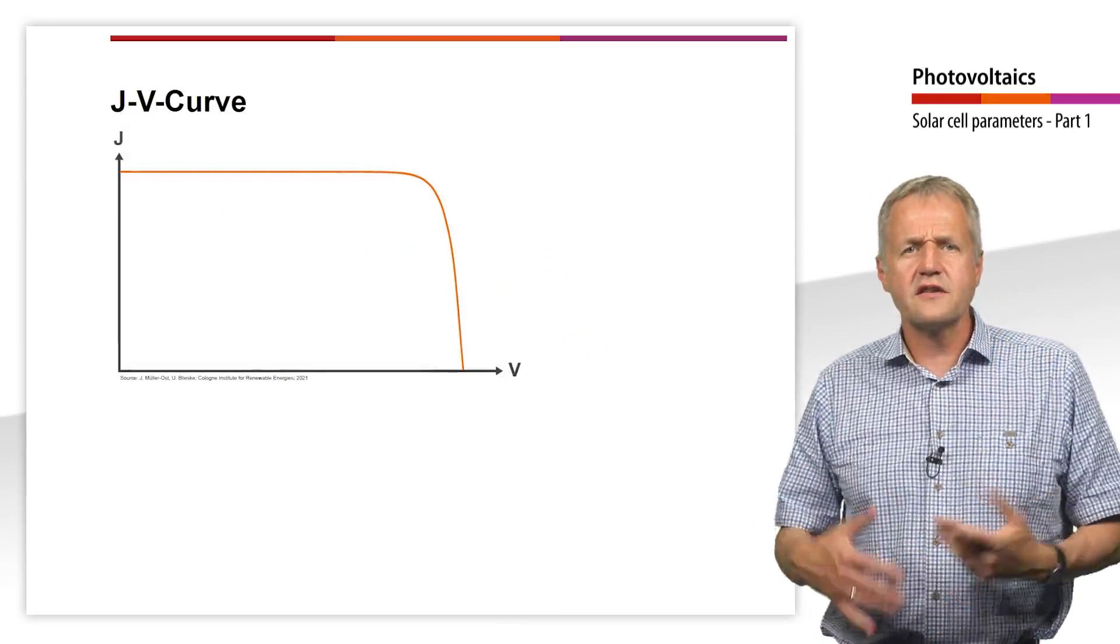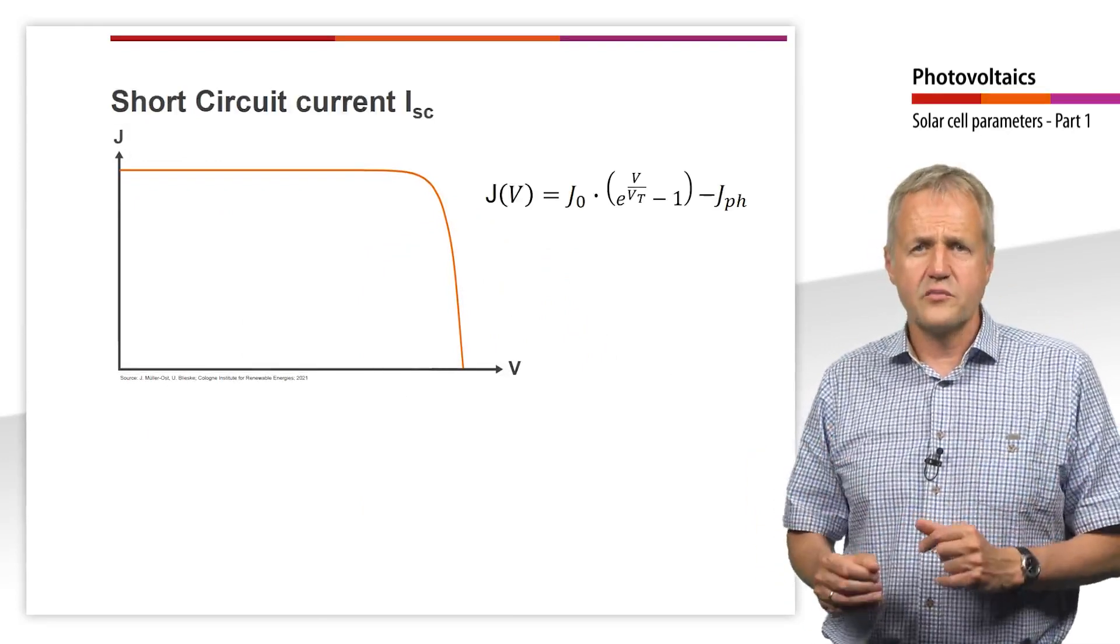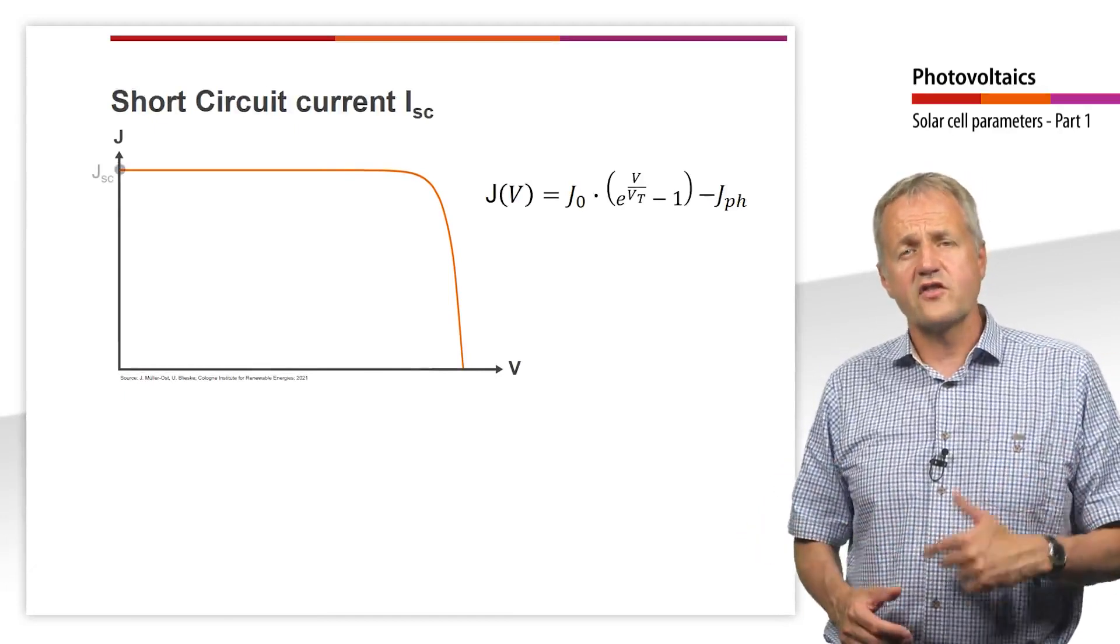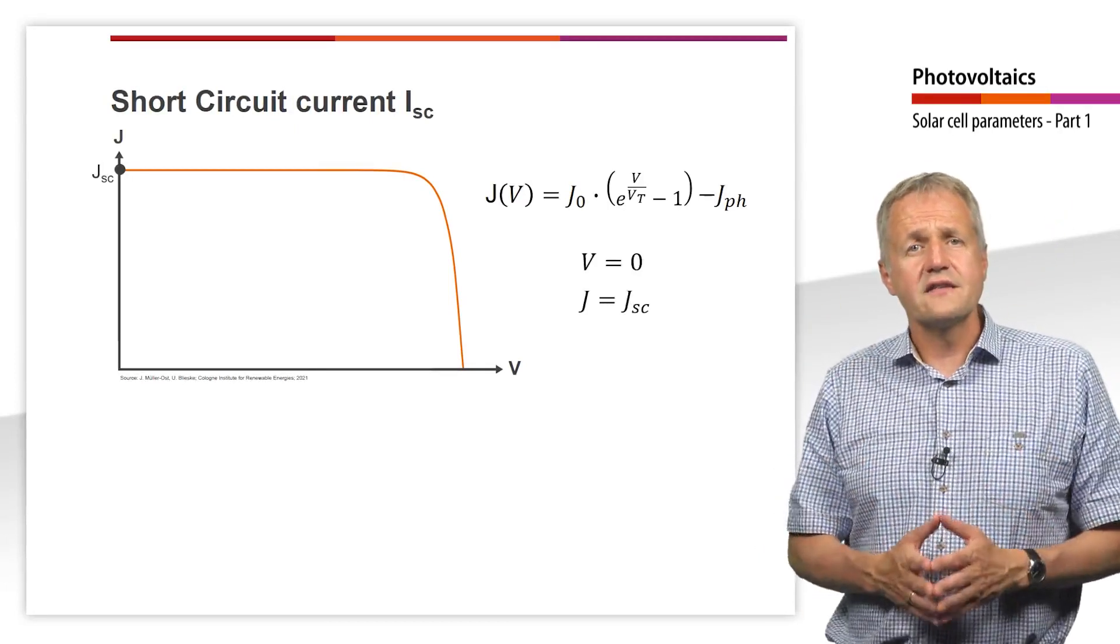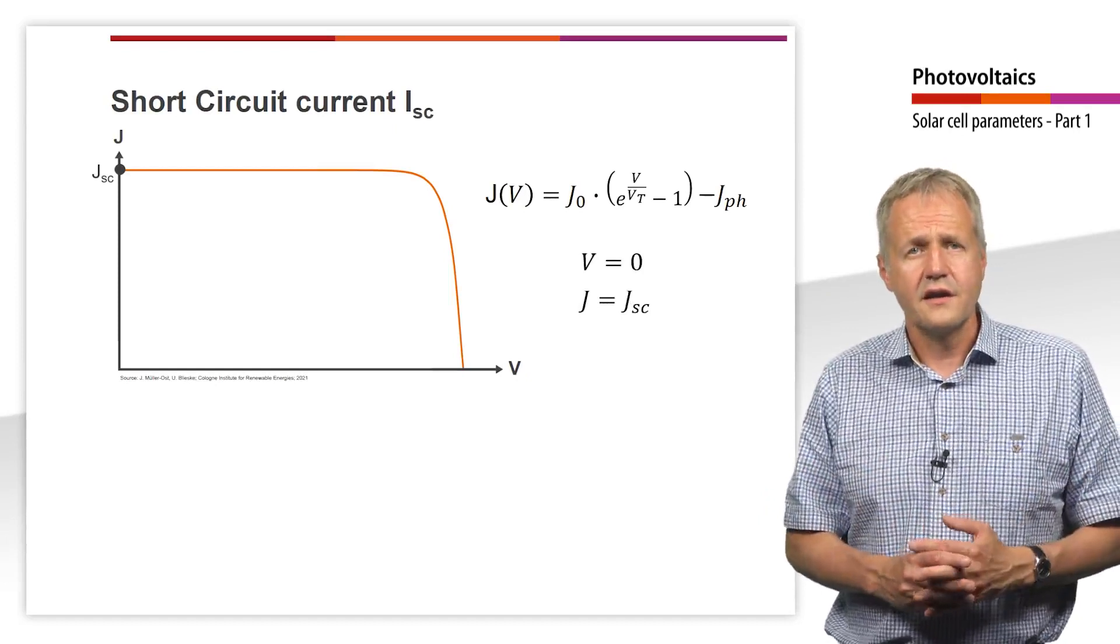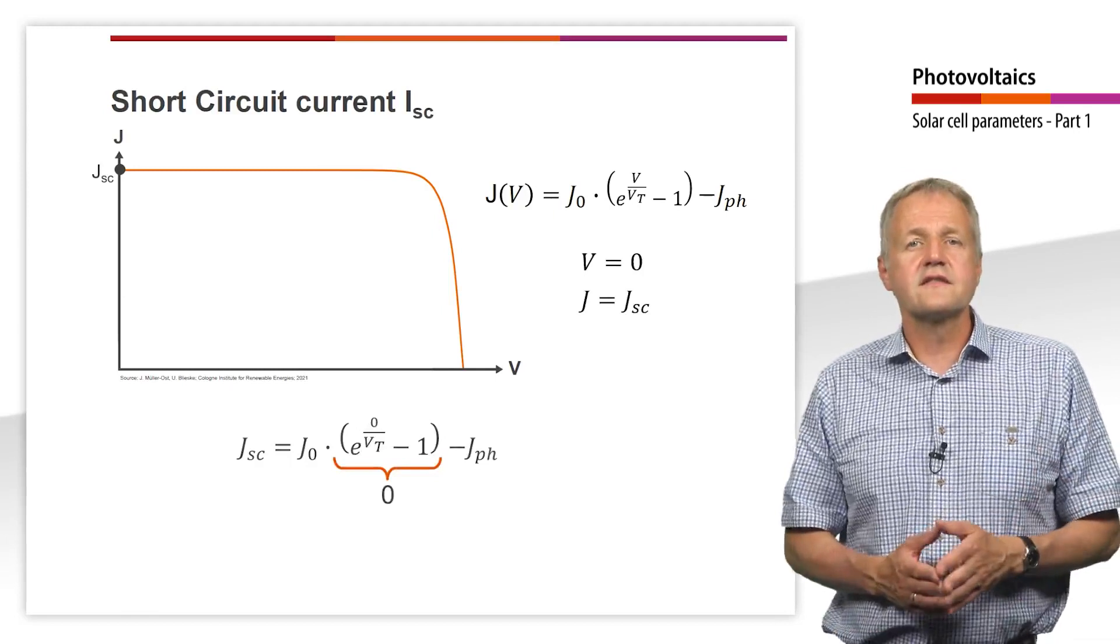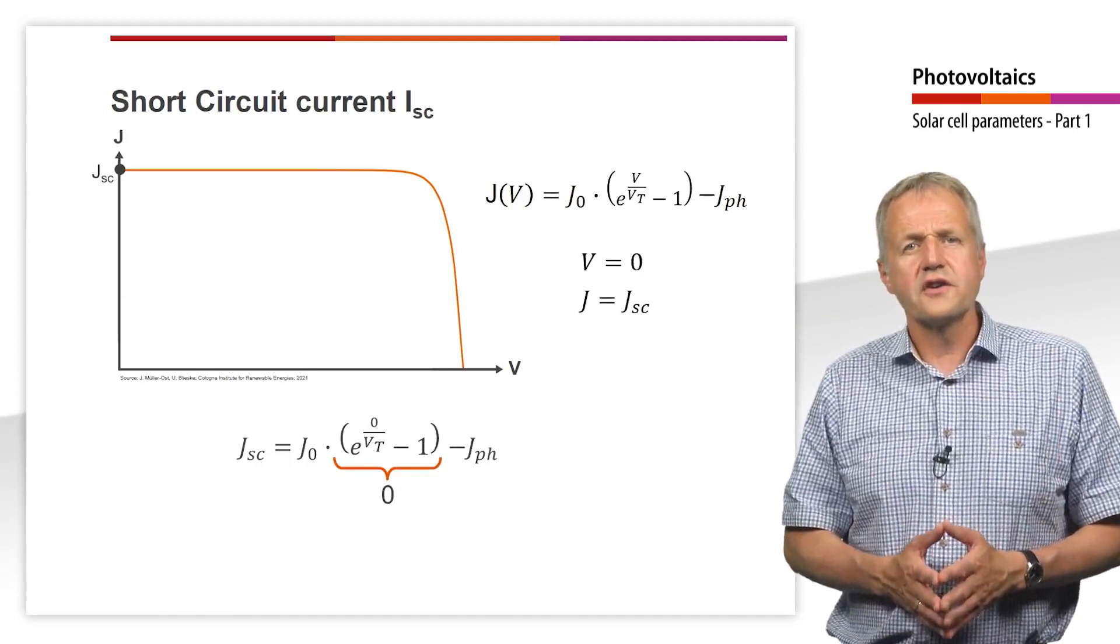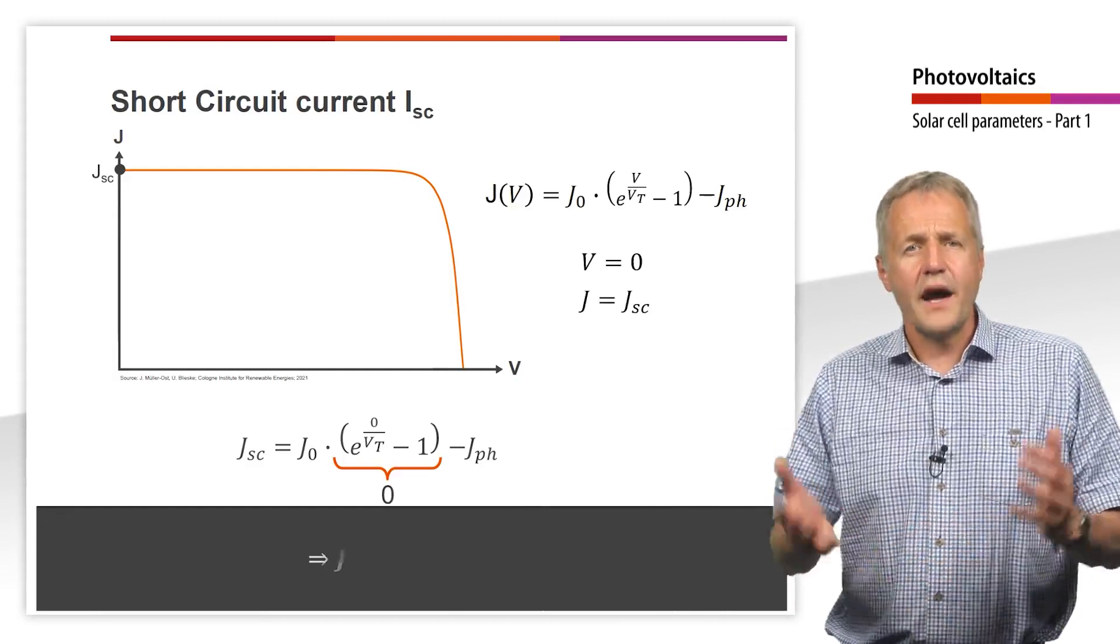Two essential parameters to describe the JV curve of a solar cell are the intersections between the curve and the axis. At the intersection with the y-axis, the voltage is zero. The current density is maximum. It is called the short circuit current density. Let's insert zero into the equation for V. In this case, the entire current flows through the external circuit. The diode current is zero. The short circuit current therefore is equal to minus the photocurrent.